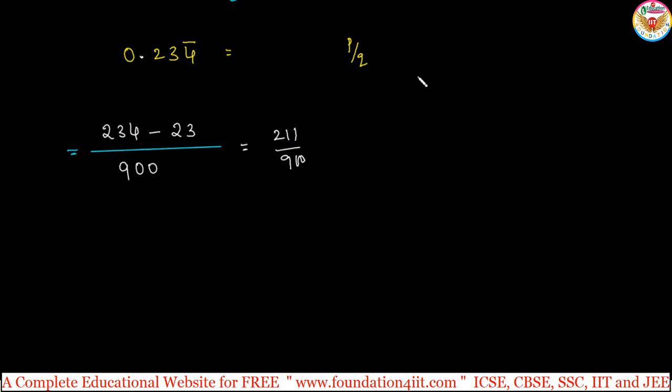Let us take one more example. 0.234 with bar on 34. Now, this answer is 234 minus 2, because which is not repeating is only 2. Entire number minus not repeating number, divided by how many digits are repeating: 2 digits. So 2 nines. After the point which are not repeating digits is 1, so 1 zero you should keep.